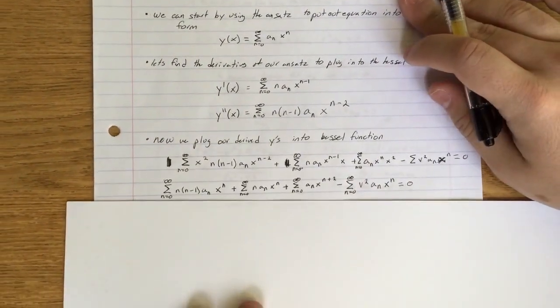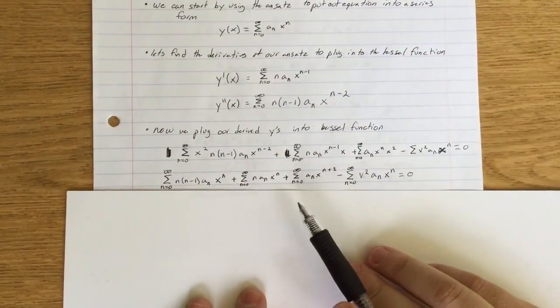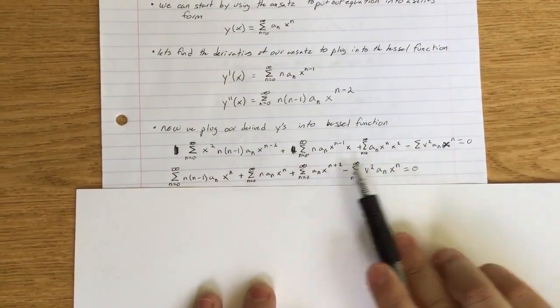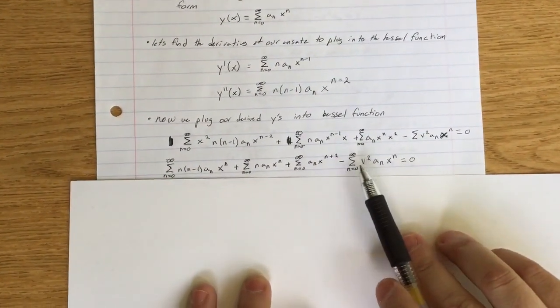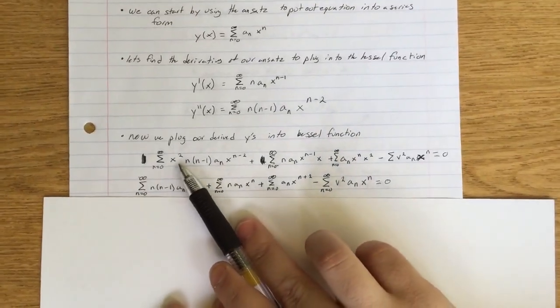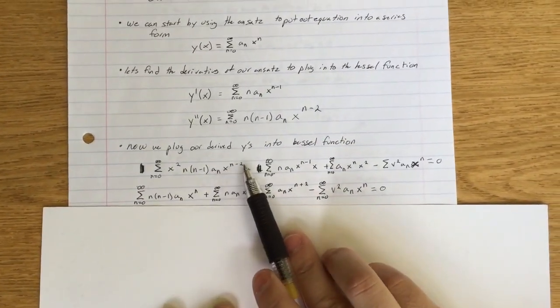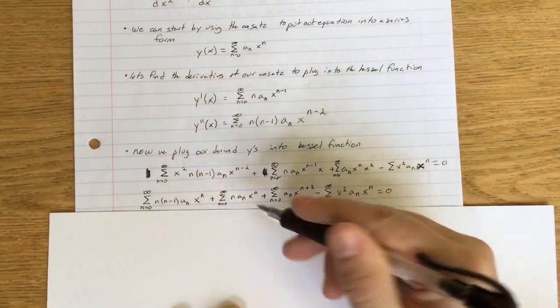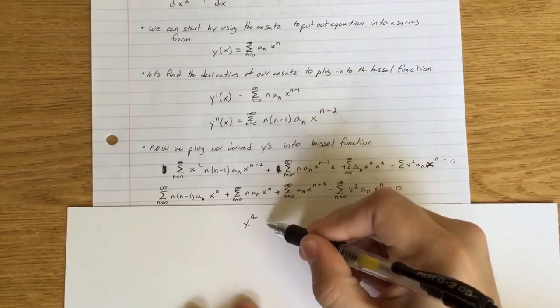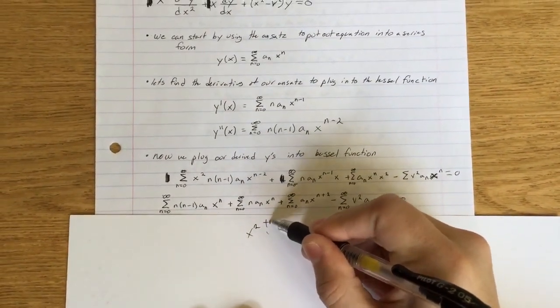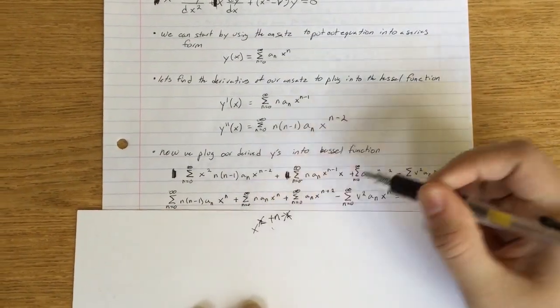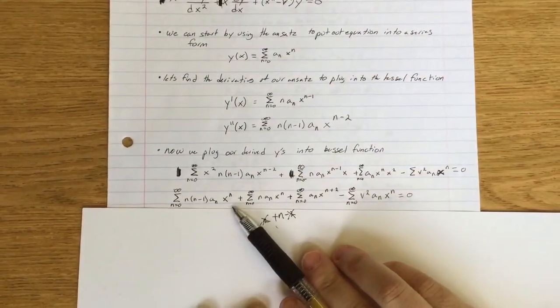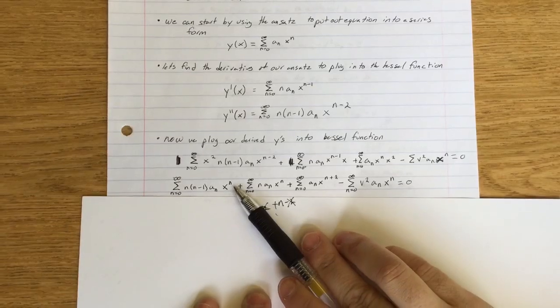Now we plug it in to the Bessel function. This is where you can see how this n minus 2 and n minus 1 has a good effect on it. When we multiply x squared by x to the n minus 2, we actually turn that into x to the n plus 2 minus 2. So the 2's cancel out and it leaves us with that in the form of x to the n.